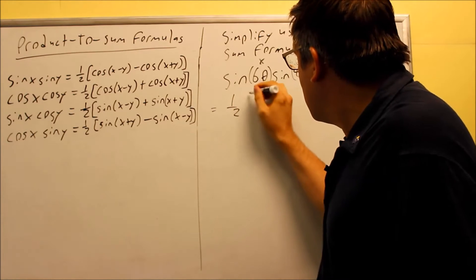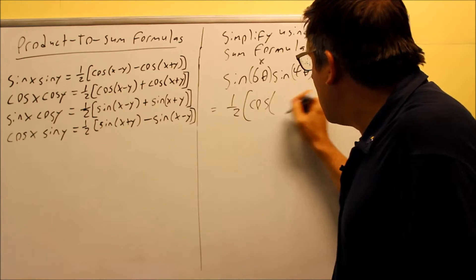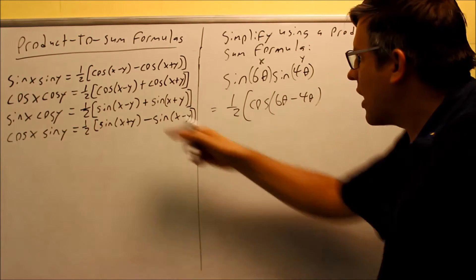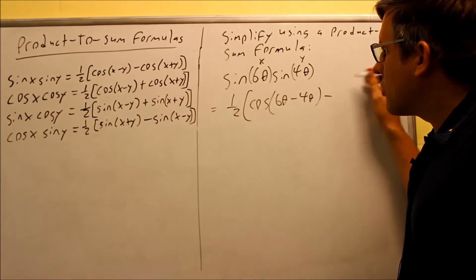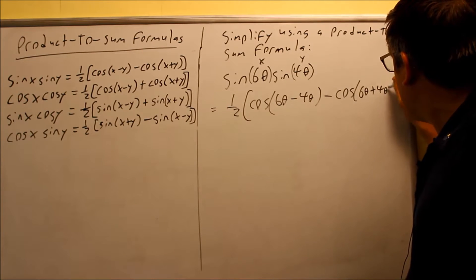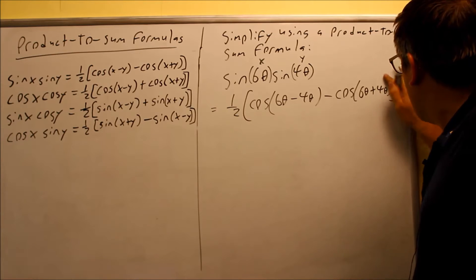So we have 1 half. I have cosine of x minus y, 6 theta minus 4 theta. That's x minus y. We have minus cosine 6 theta plus 4 theta. And that's it.